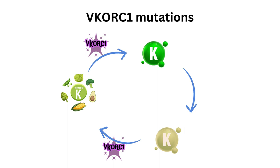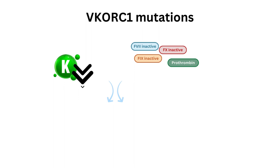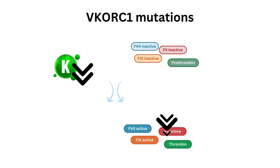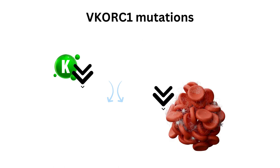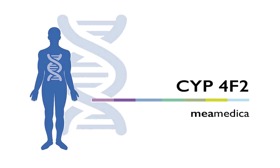Certain variations in the VKORC1 gene have been linked to reduced VKORC1 activity, meaning the enzyme is less effective at recycling Vitamin K back to its active form. As a result, individuals with this mutation may have lower levels of active Vitamin K available for the synthesis of clotting factors, potentially leading to a decreased ability to form blood clots efficiently. Since variations in VKORC1 itself already affect clotting, careful consideration must be given to what dosage a patient should receive of medications that inhibit blood clotting. VKORC1 also operates in close collaboration with CYP4F2 — make sure to watch that video too.